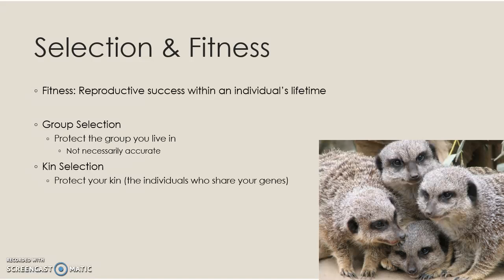If your sibling already shares 50% of your DNA, they will pass on half of that DNA to their offspring. So any one of their offspring will have a quarter of your DNA. If you have at least four nieces and nephews, then that compensates if you have no offspring. Family shares your DNA, and that is evolutionarily advantageous. Biologically, enough of your genetic material is shared with your kin that it matters evolutionarily.